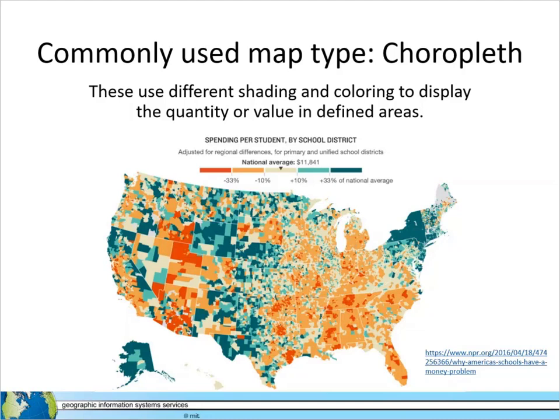This example of a choropleth map uses shades of two different colors, orange and teal, to show spending per student by school districts in the United States. School district is the defined area and spending per student is the quantity.